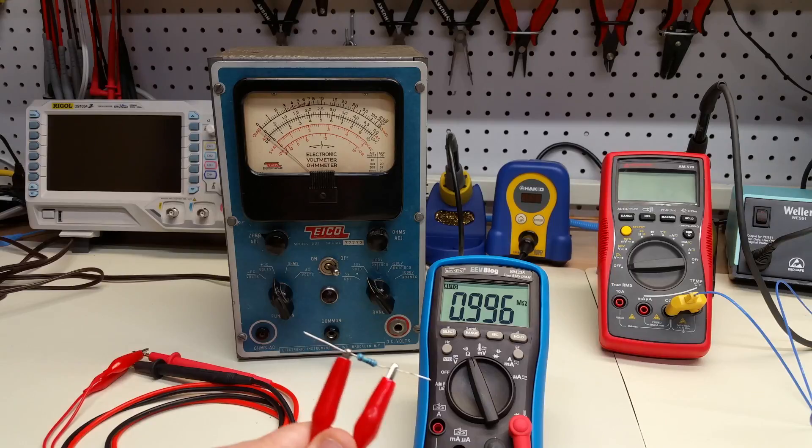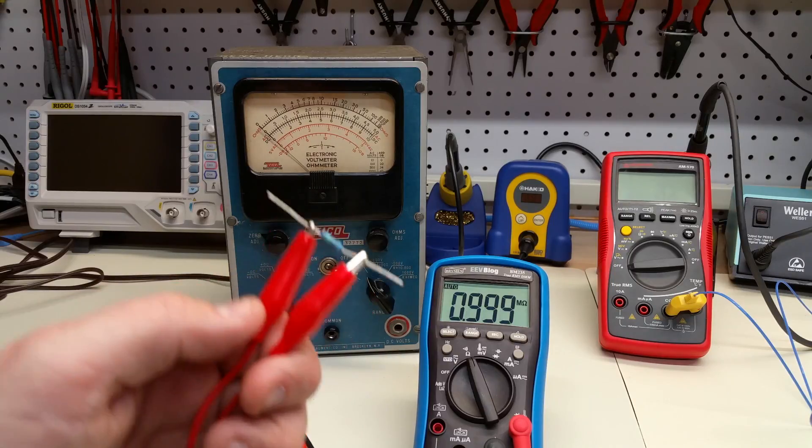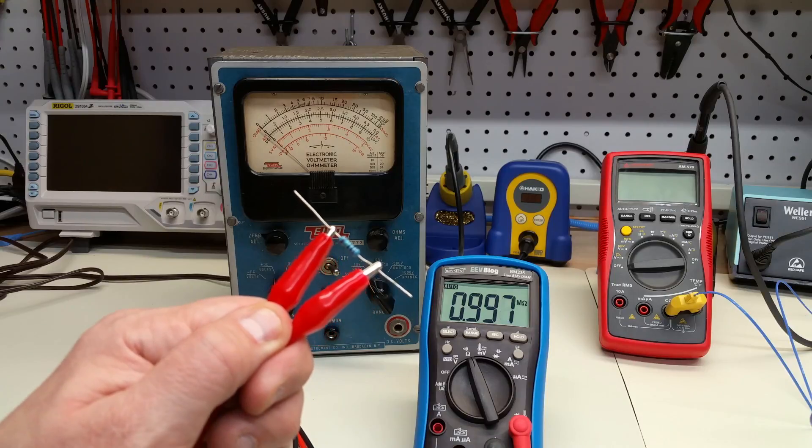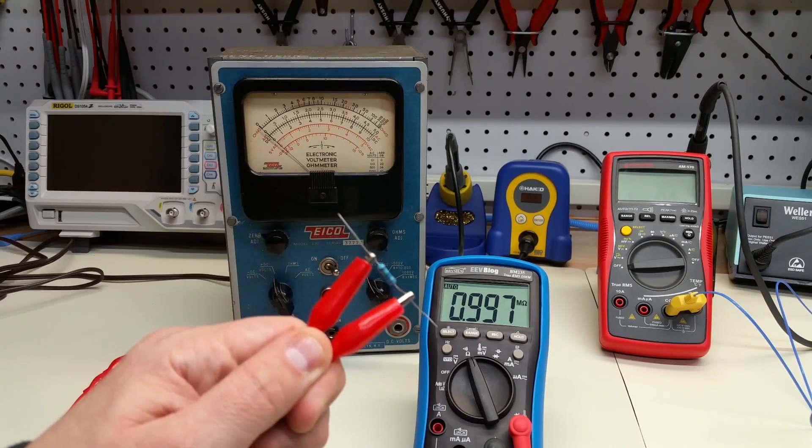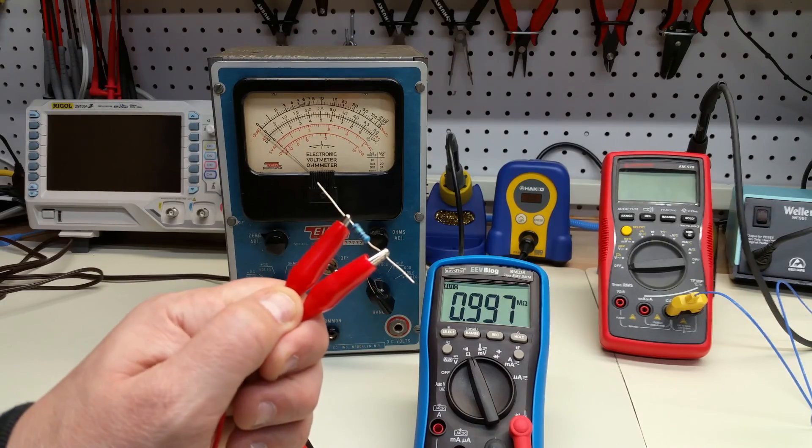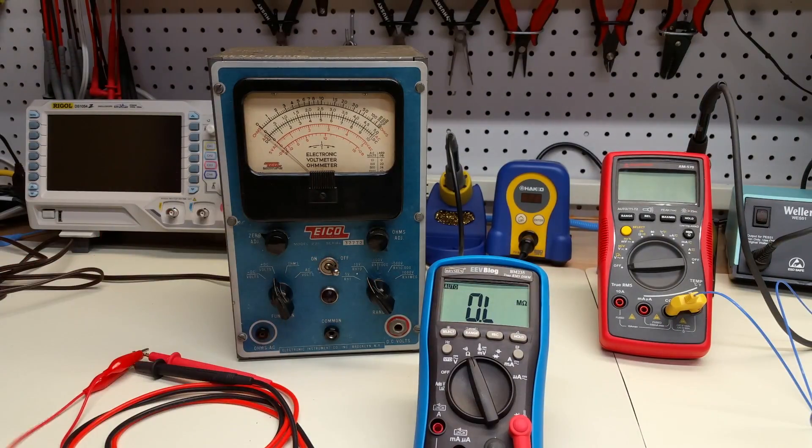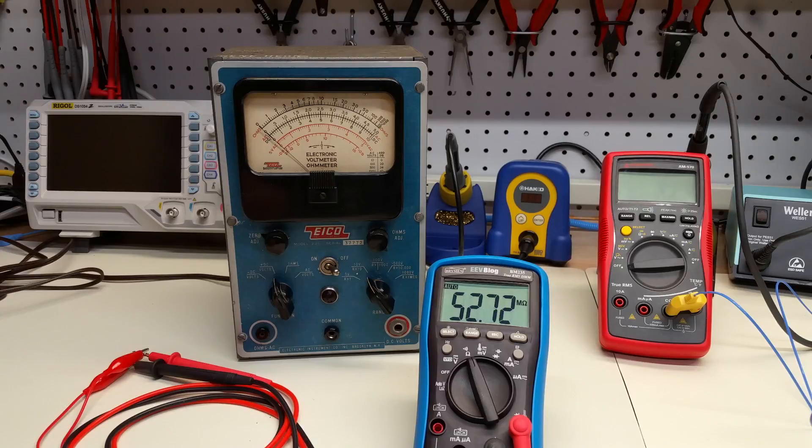So as the temperature increases for this resistor, and this is a carbon film resistor, the resistance goes down. So this is said to have a negative temperature coefficient of resistance. But then you can also ask the question, well, what about other types of resistors? Do they behave in the same way?